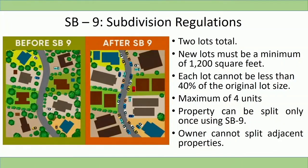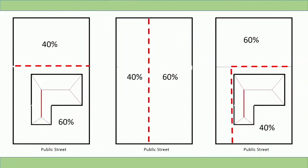To be eligible for an urban lot split, the original lot can have a maximum of two dwelling units, which would result in each lot having two units for a maximum of four units total. The urban lot split can only happen once, and the owner cannot split adjacent properties. Lots may be split in many configurations — vertically, horizontally, or as a flag lot — but the minimum lot size must meet at least a 40/60 lot ratio.